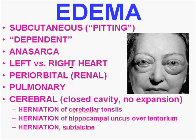We talk about edema in heart failure often as left versus right, although it's almost never purely one or the other. In left-sided heart failure, the edema would be primarily pulmonary. In right heart failure, the edema would be primarily systemic — extremities, liver, internal organs, GI. Periorbital edema is seen in a variety of conditions, and renal disease is one of the most common. The edema of renal failure often results in periorbital edema. We saw that the edema of hepatic failure results in ascites.